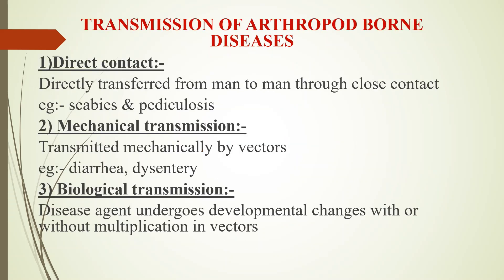Transmission of arthropod-borne disease can be classified into three types: direct contact, mechanical transmission, and biological transmission. Direct contact means directly transferred from man to man through close contact. Examples are scabies and pediculosis.